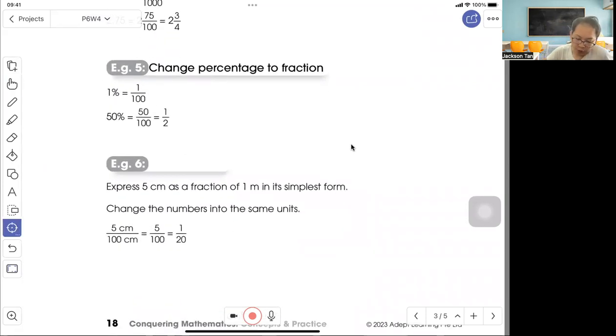Example 5: Convert percentage to fraction. 1% is 1 out of 100. 50% is 50 out of 100. In simplest form, that gives you 1/2.